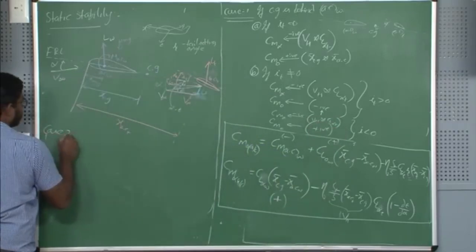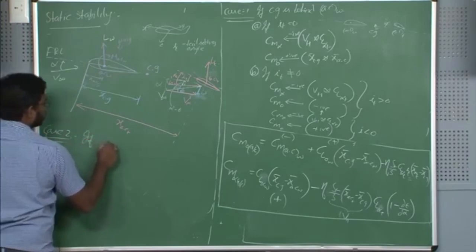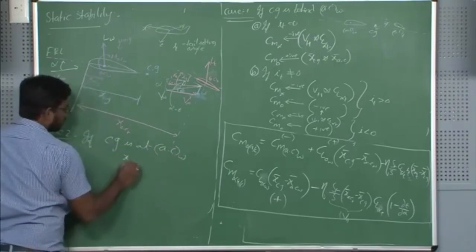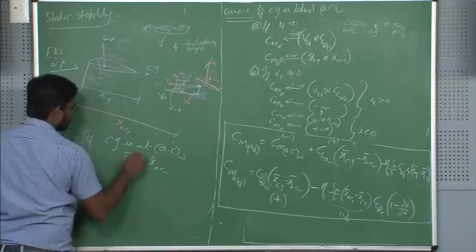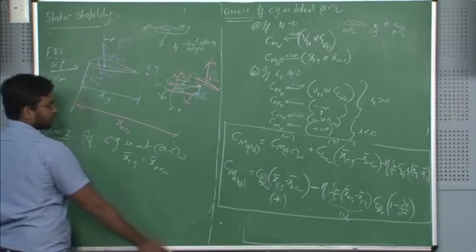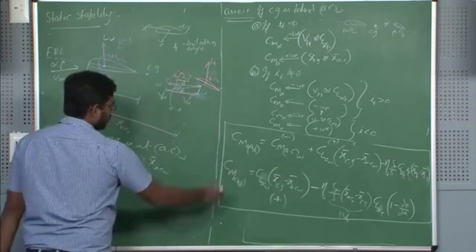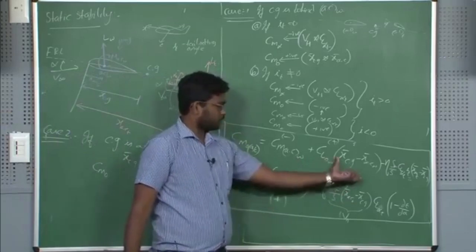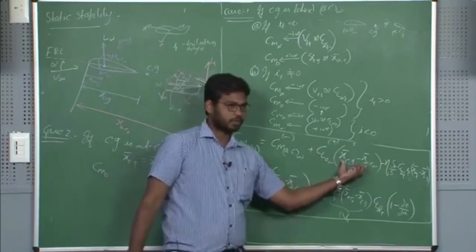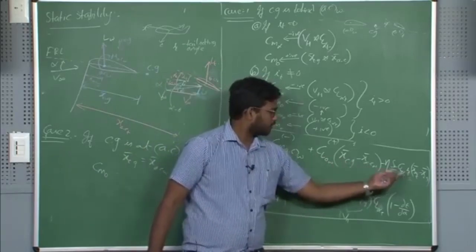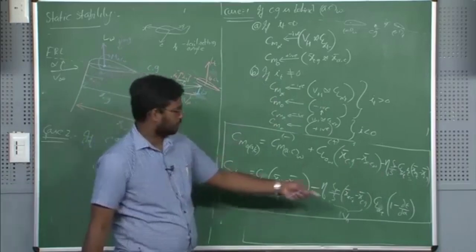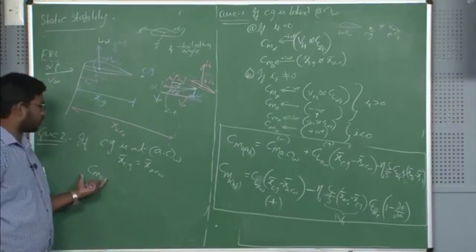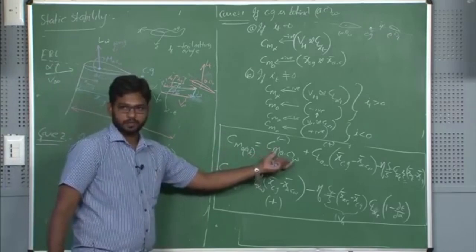Case 2: if CG is at the AC of the wing, that means x_CG equals x_AC of wing. What happens to CM_0 of the aircraft? The first contribution is 0 because CG equals AC — the difference is 0, there is no moment. If i_t is 0 to start with, CM_0 of the aircraft will become negative automatically, unless you use a reflexed airfoil.